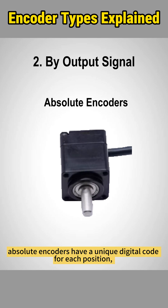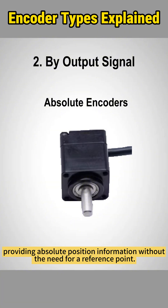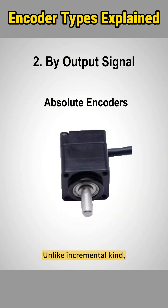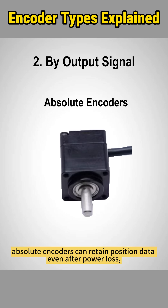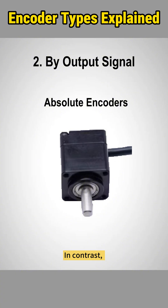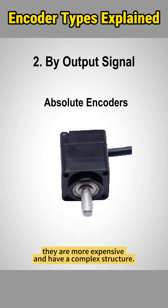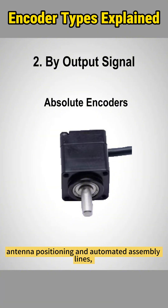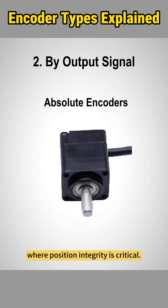Absolute encoders have a unique digital code for each position, providing absolute position information without the need for a reference point. Unlike incremental encoders, absolute encoders can retain position data even after power loss, making them ideal for high-reliability applications. In contrast, they are more expensive and have a complex structure. They're essential in applications like robotic arms, antenna positioning, and automated assembly lines, where position integrity is critical.